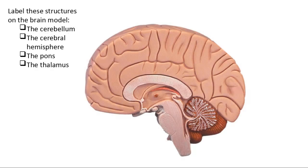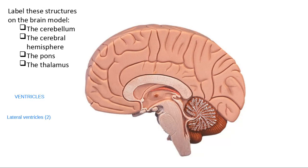Cerebrospinal fluid is found not only in the subarachnoid space, but also in structures called ventricles — the fluid-filled spaces inside the brain. We have four ventricles in the brain: two lateral ventricles, then the third ventricle, and the fourth ventricle.